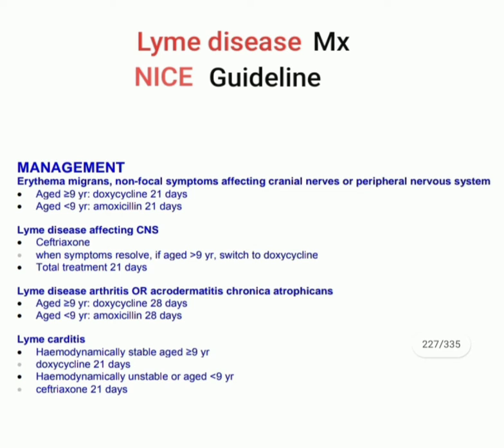There are four headlines. First: if Lyme disease presents with erythema migrans, non-focal symptoms, or symptoms affecting cranial nerves or the peripheral nervous system — age nine years or more: doxycycline 21 days; age less than nine years: amoxicillin 21 days.